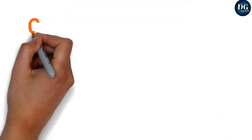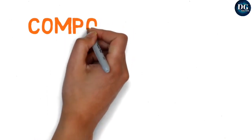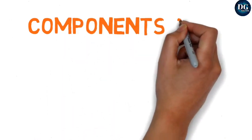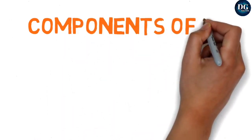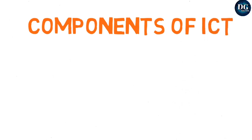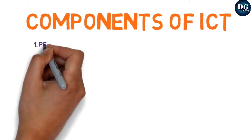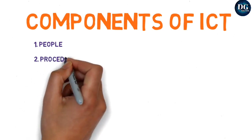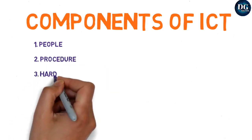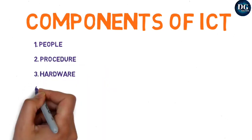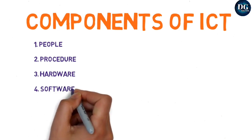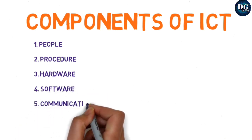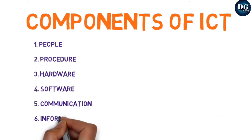Next are the components of ICT. ICT has six components. The first component is people/persons. The second is procedure or method. The third is hardware. The fourth is software. The fifth is communication. And the sixth is information. These are the six components of ICT.